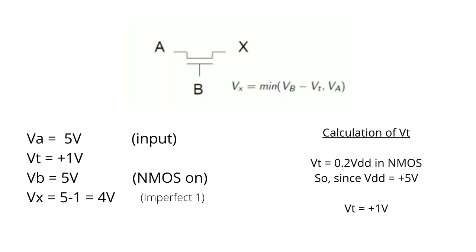So irrespective of what we give at A, we will be getting the minimum of VA and VB minus VT. In this case, V drain minus V threshold. The main factor that we have to consider here is VB minus VT or the drain voltage minus the threshold voltage.